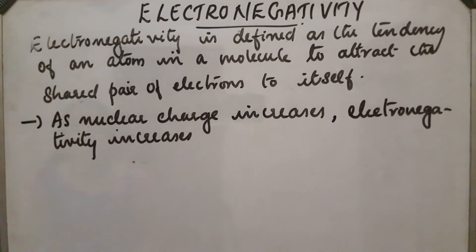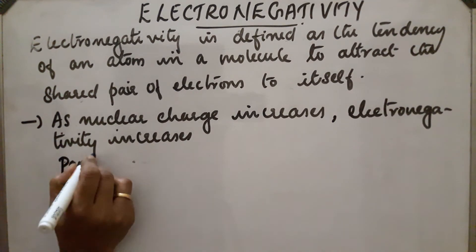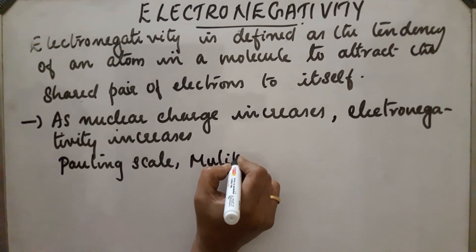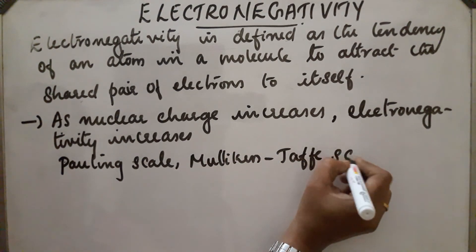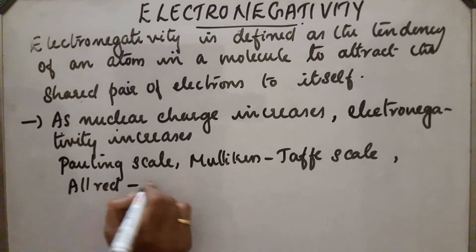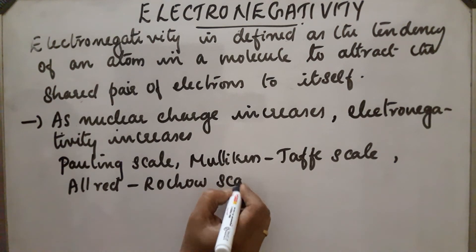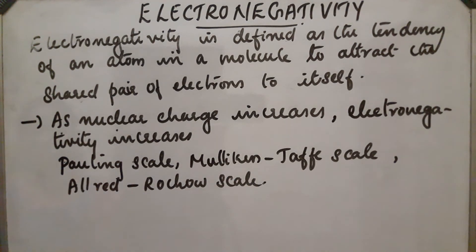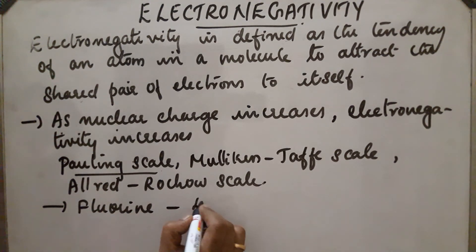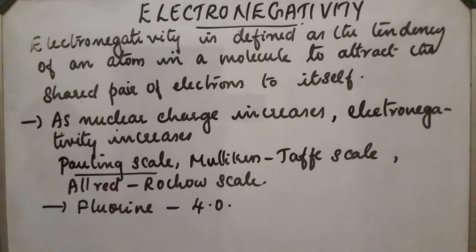There are different numerical scales to find the electronegativity of different elements: the Pauling scale, the Mulliken scale, and the Allred-Rochow scale. Of these, the Pauling scale is the most commonly used and was developed by Linus Pauling. According to this scale, fluorine is the most electronegative atom with a value of 4.